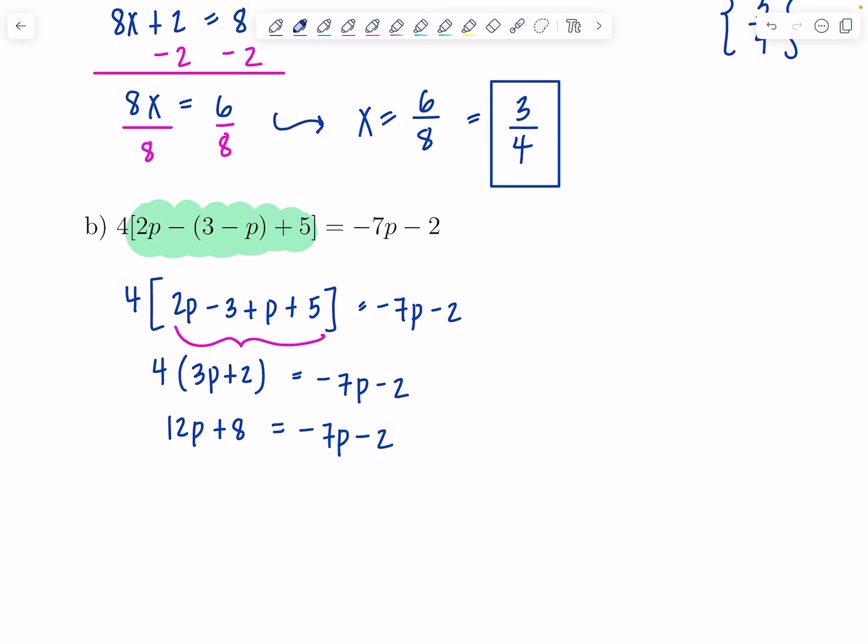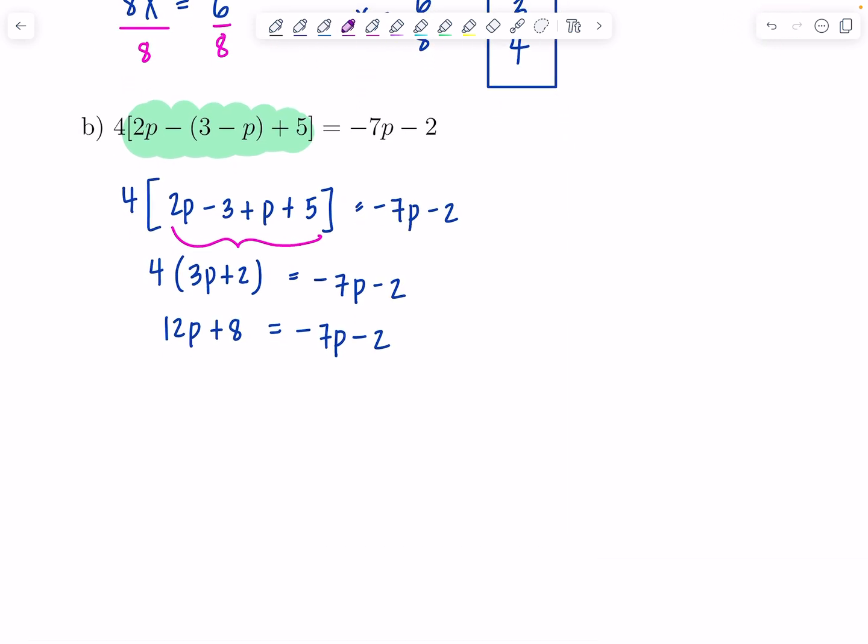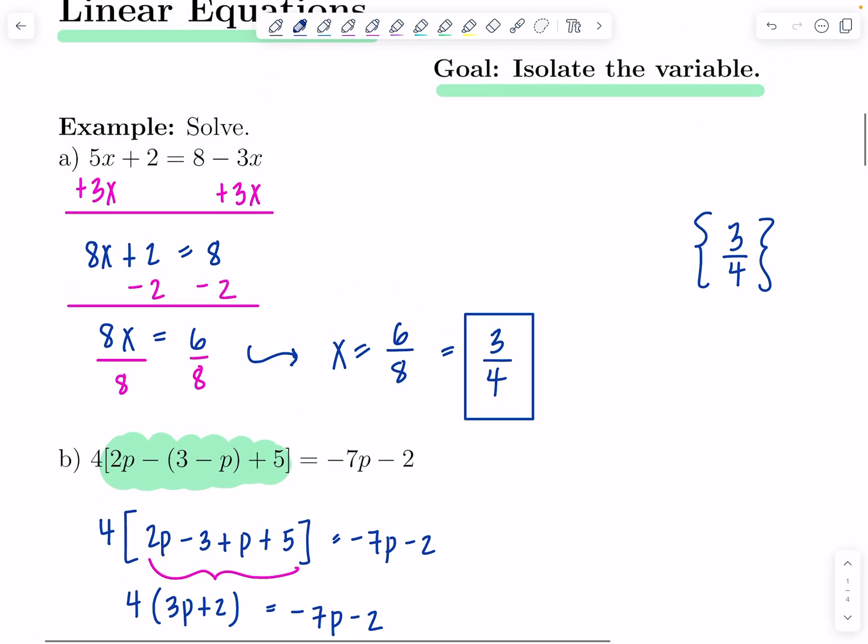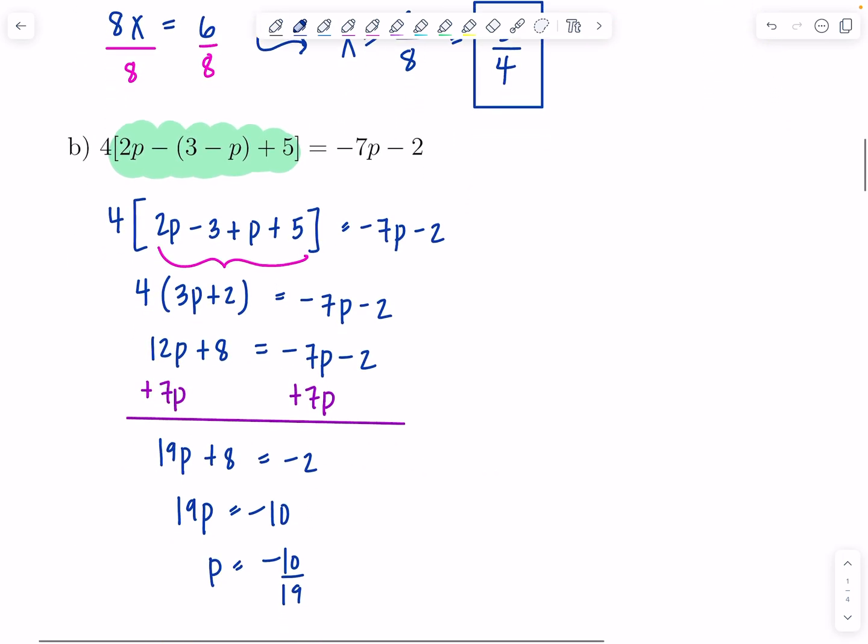We want to get all the variables on one side and then divide by their coefficient. So I'm going to add 7p. So what do we have now? 19p plus 8 equals negative 2. Subtract 8. I'm not going to write it on both sides. You can do it in your head. It's totally acceptable. So 19p equals negative 10. Divide by 19. p is negative 10 over 19.